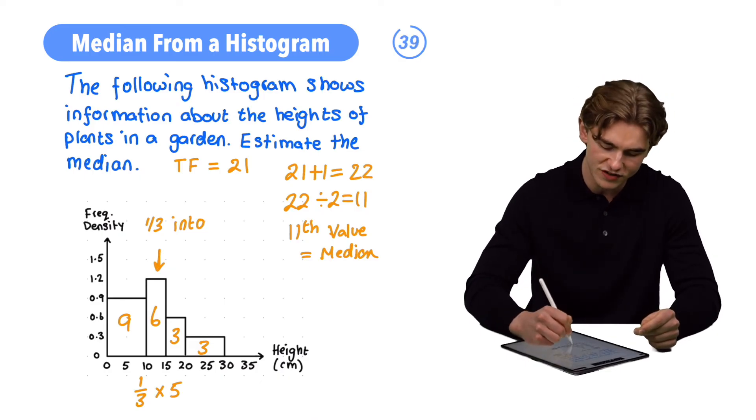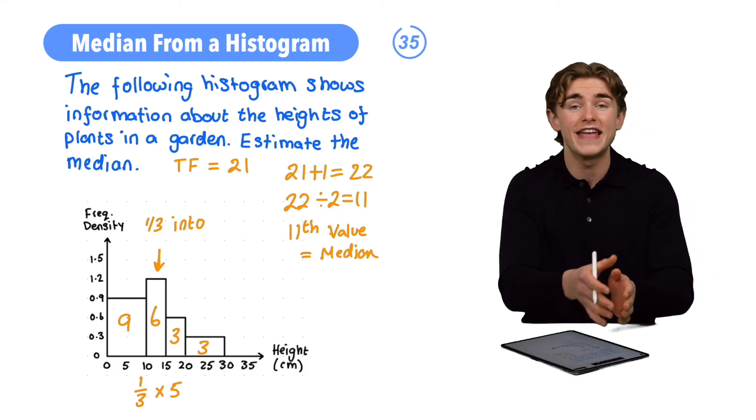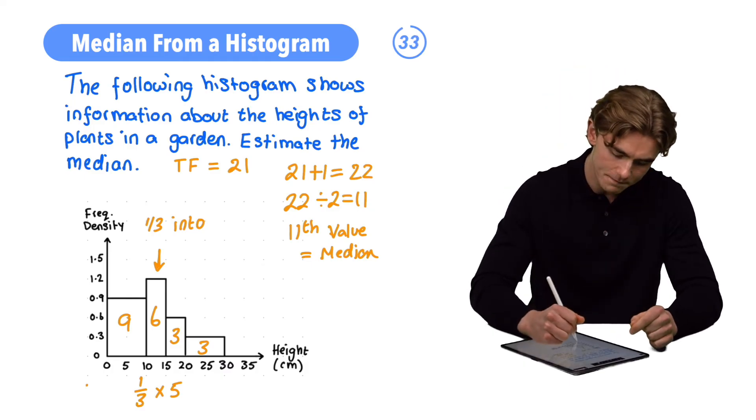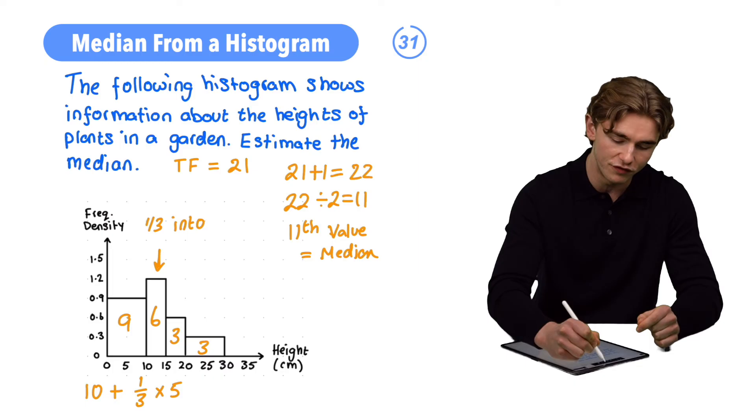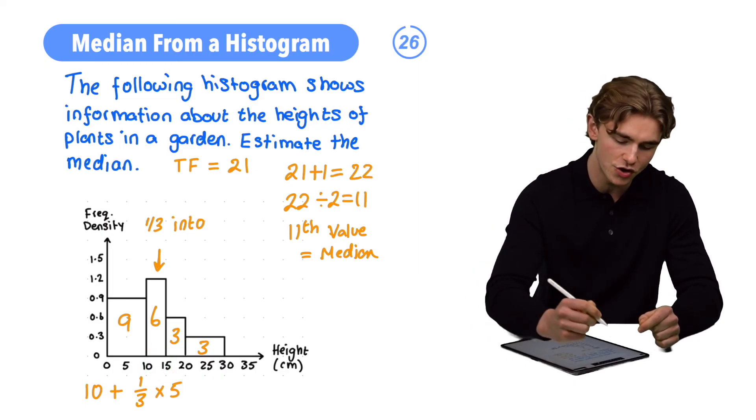We're going to add that to the value of 10, which is our starting value, to work out the height. We have the initial 10, and then we're going to add 1/3 of this bar. The width of the bar is 5, so we add 1/3 of 5 to 10 to find our new value.